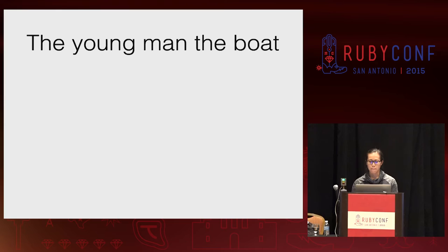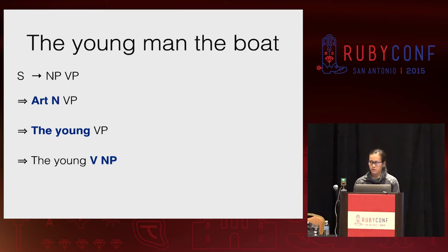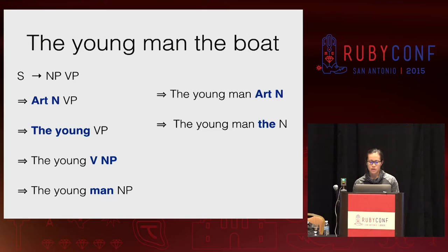Using this grammar, we can start at the top level and keep applying production rules until we generate the full sentence. We start with 'sentence,' which can be rewritten as a noun phrase and a verb phrase. The noun phrase then translates to an article plus noun, which hits the terminals 'the' for the article and 'young' for the noun. The verb phrase gets rewritten as a verb followed by noun phrase, then the verb becomes 'man' followed by noun phrase. The noun phrase then becomes article followed by noun — the article becomes 'the,' and the noun becomes 'boat.' The same rules can apply for the other sentence, 'the young man drank beer.'